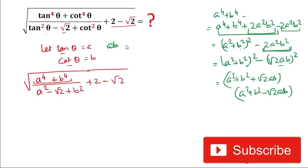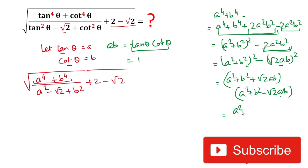Here, the value of a·b means tan θ times cot θ. The multiplication of tan θ and cot θ equals 1. So the value of ab = 1. Our numerator becomes: (a² + b² + √2) times (a² + b² − √2).